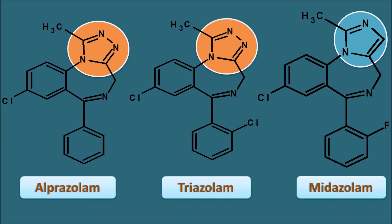In summary, the SAR of Benzodiazepines: position one requires a small alkyl group; position two requires a keto group; position three — an -OH group causes polarity and short duration of action; position four requires a double bond; position five requires a phenyl group (ortho/di-ortho substitution increases activity, para substitution decreases it); positions six, eight, and nine should not be substituted; and position seven requires an electron-withdrawing group for activity.